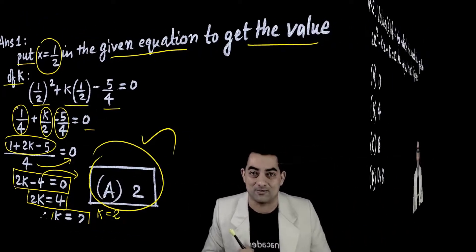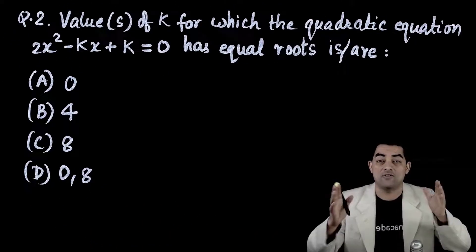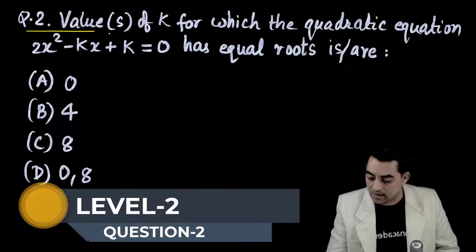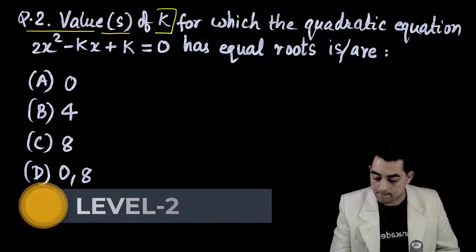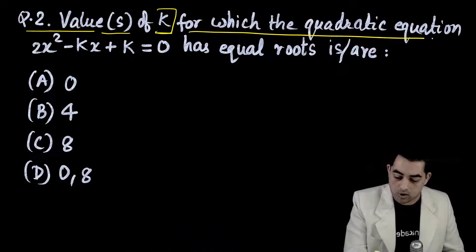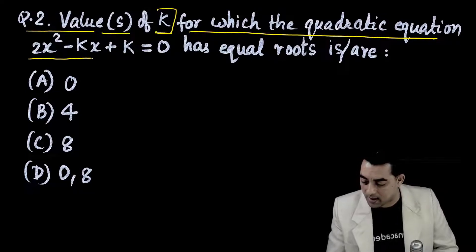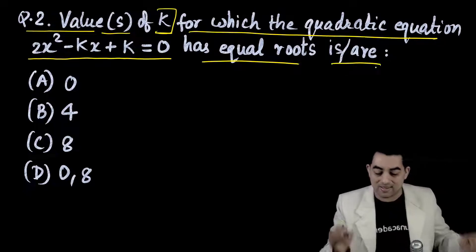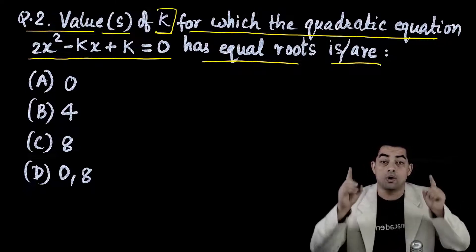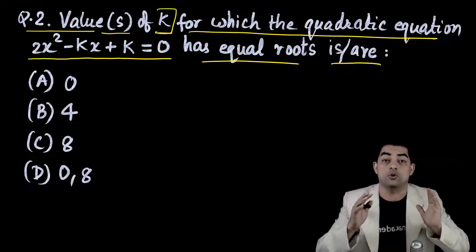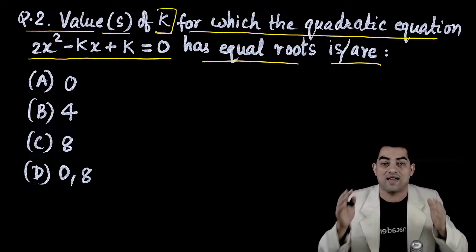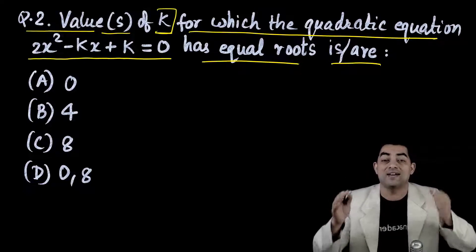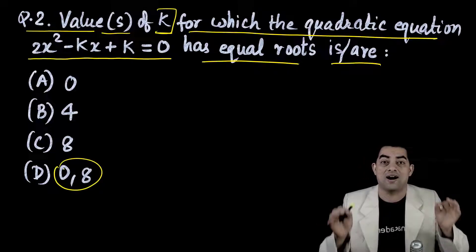Level 2, question number 2: find the value(s) of k for which the quadratic equation 2x² - kx + k = 0 has equal roots. Options: a = 0, b = 4, c = 8, d = 0 and 8. Pause the video and attempt the answer.